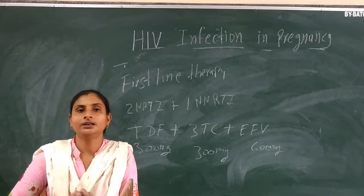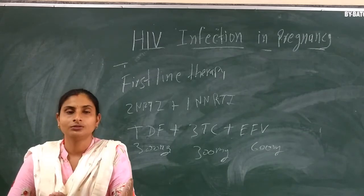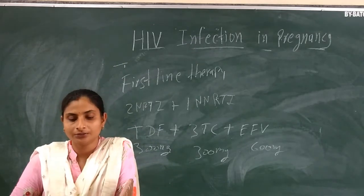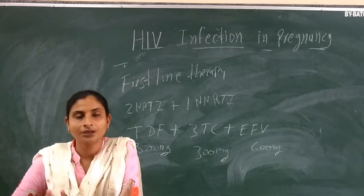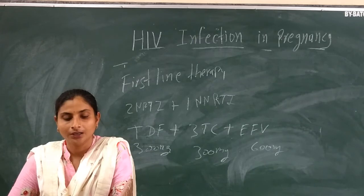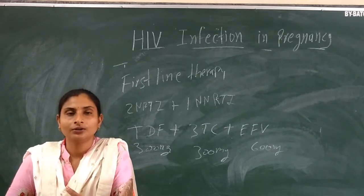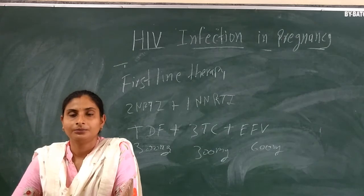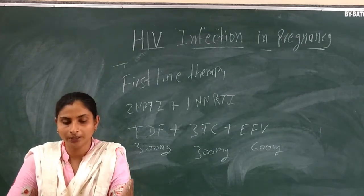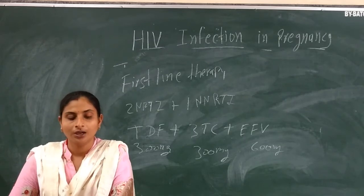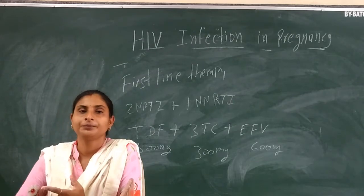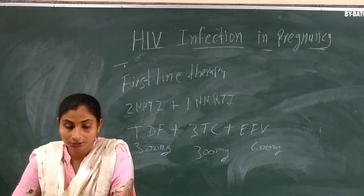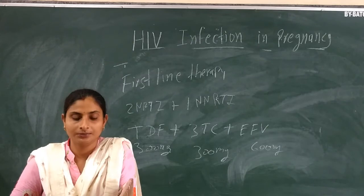If transmission risk is increased, procedures such as artificial rupture of membranes or fetal scalp electrode application should be avoided. The umbilical cord should be clamped with zero bleed technique. Maternal blood exposure to the fetus should be minimized.